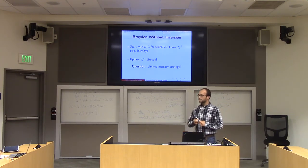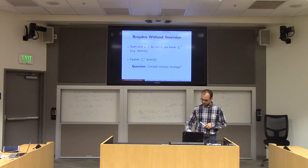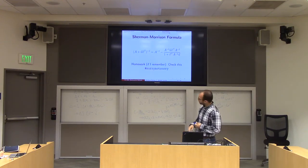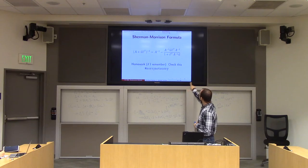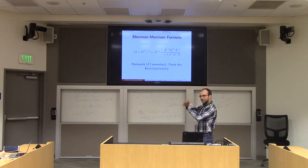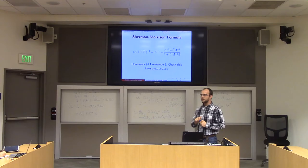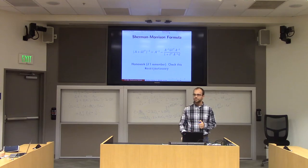Similar to our limited memory strategy for updating J_k, you'll notice the Sherman-Morrison formula also looks like it takes an initial matrix A and then applies some update formula — so you can just as easily apply limited memory ideas there as well.